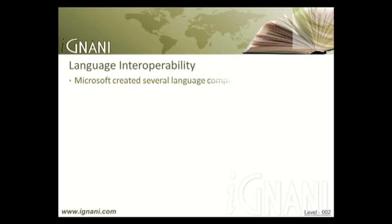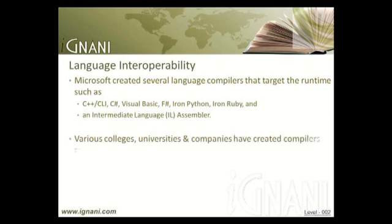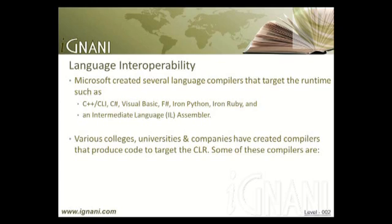Microsoft created several language compilers that target the runtime: C++, C-Sharp, Visual Basic, F-Sharp, IronPython, IronRuby, and an intermediate language assembler. In addition to Microsoft, various colleges, universities, and companies have created compilers that produce code to target the CLR.